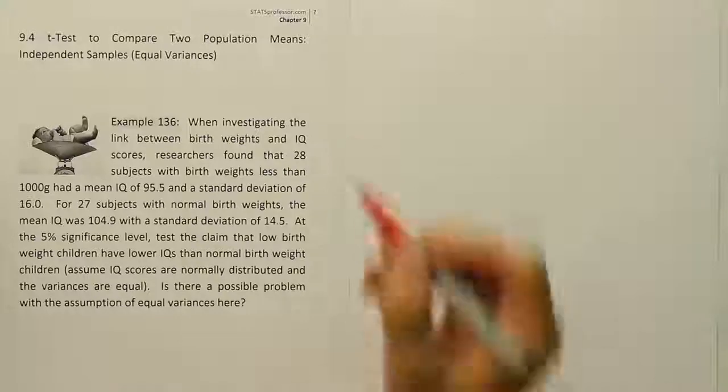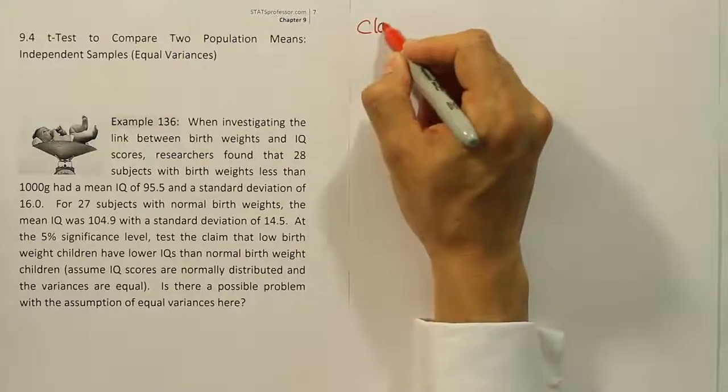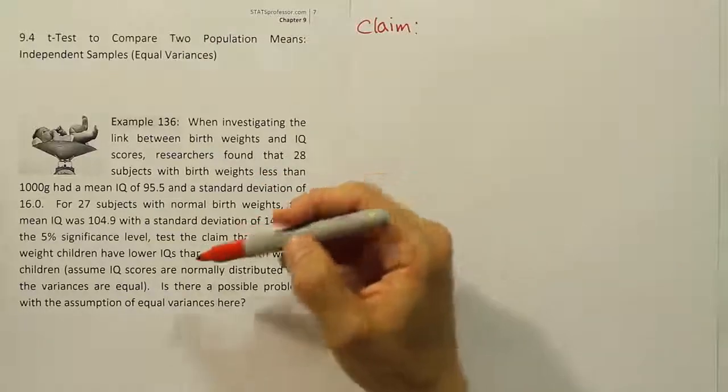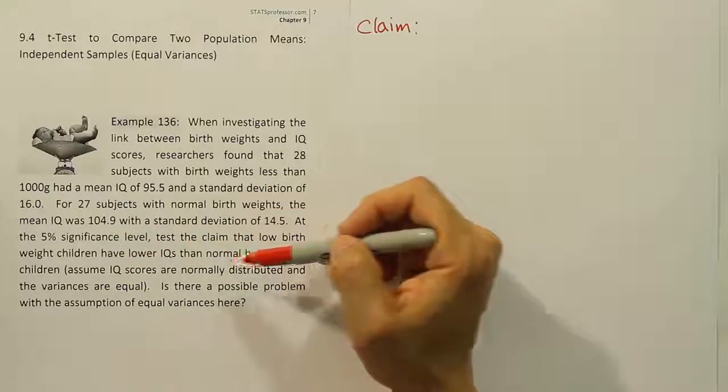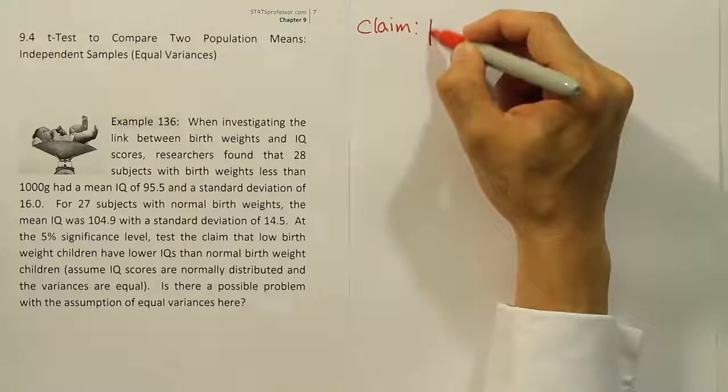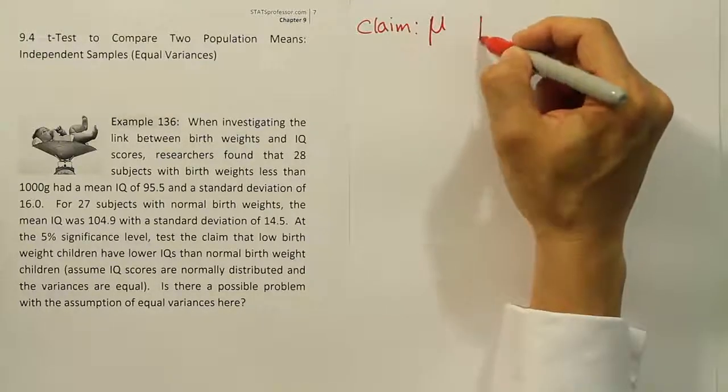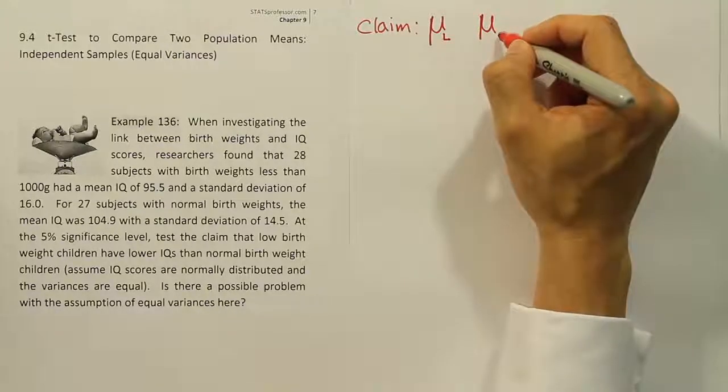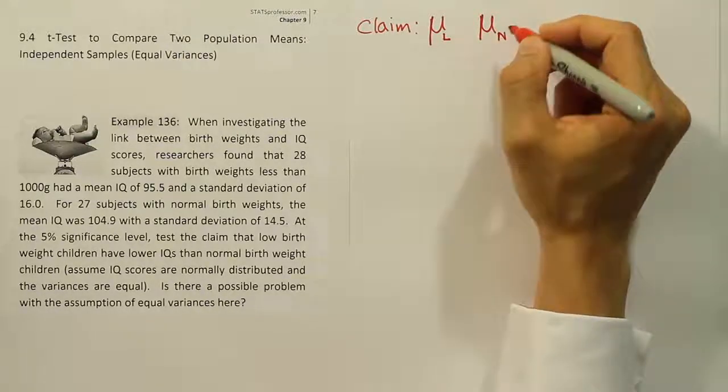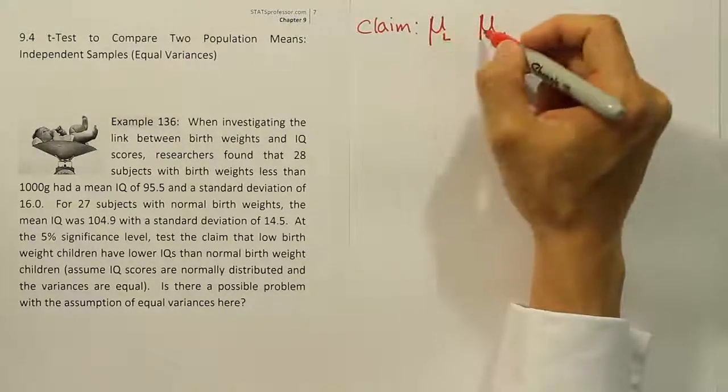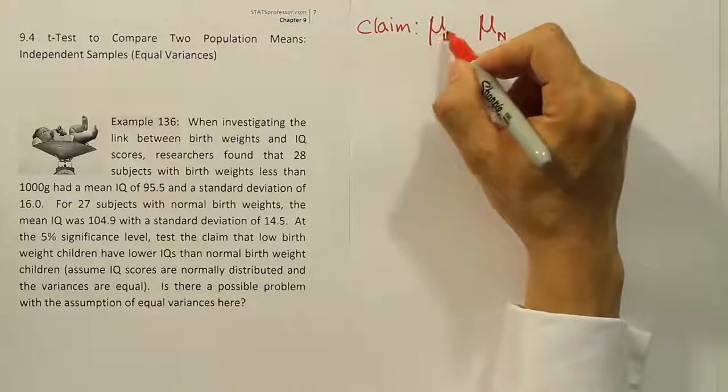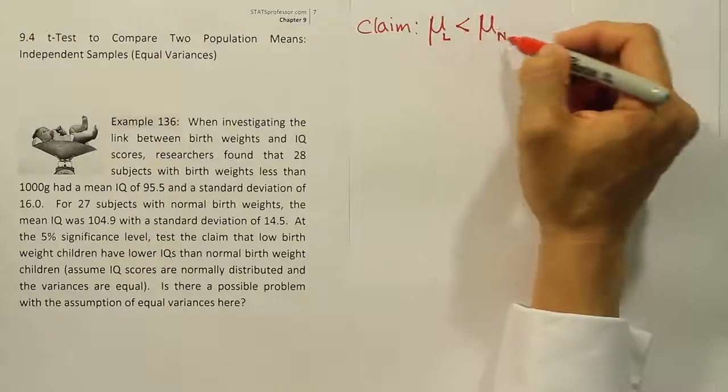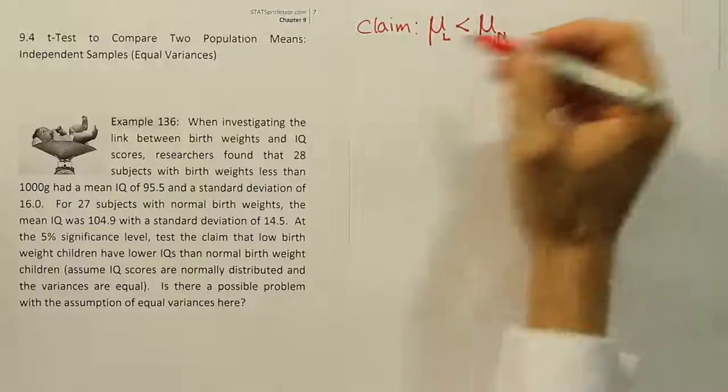So I'm going to write the claim out first. And what I want to say in my claim is exactly what they said. They said that the low birth weight children have lower IQ scores than normal birth weight children. So I want to compare two groups, the mean for two groups specifically. So I'm going to compare the mean for the low birth weight children to the mean for the normal birth weight children. And what I'm comparing is their mean IQ scores. And according to the problem, the low birth weight children should have a lower IQ than the normal birth weight children. So that's your claim.